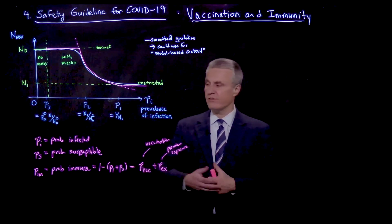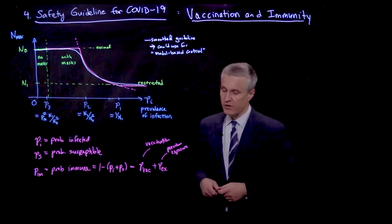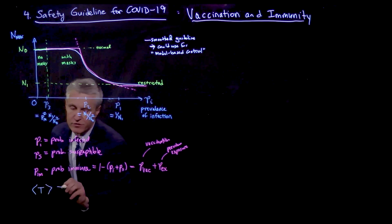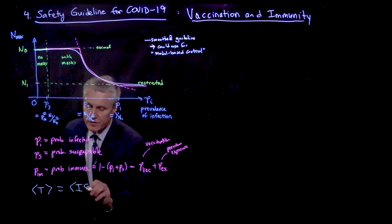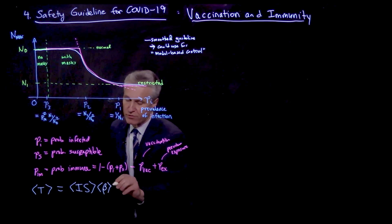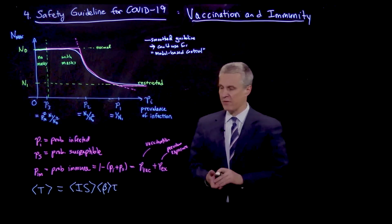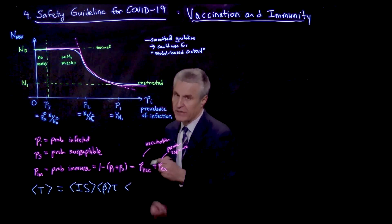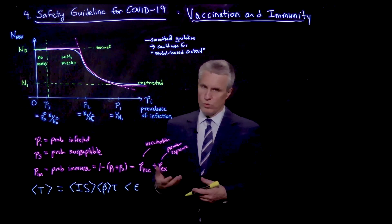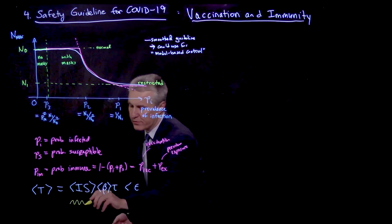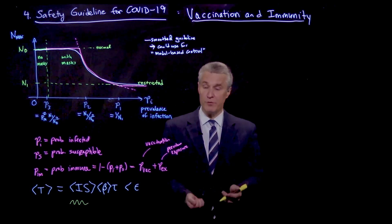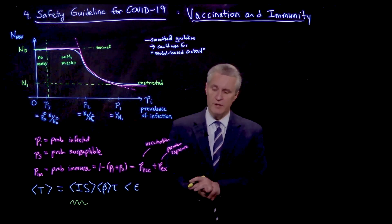We'd like to see how to adjust our thinking given these numbers. Our guideline is still based on the expected number of transmissions — equal to the expected number of infected-susceptible pairs times the average transmission rate beta times time tau — and that expected number should be less than our tolerance epsilon. What we're now reconsidering are different assumptions about the expected number of infected-susceptible pairs in the room across three risk scenarios.